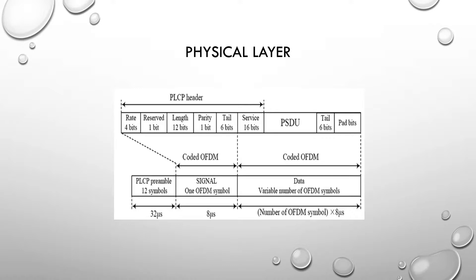The role of the defined physical layer is data transmission and reception using different radio channels. Furthermore, one of the essential features of this protocol is that it defines a method of communication among nodes where there is no association or authentication procedure required prior to exchanging data. The vehicles use a wildcard BSSID in the header of the frames to send and receive data within the range of channels.